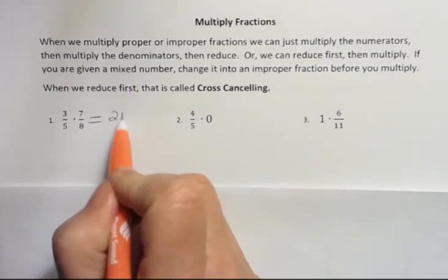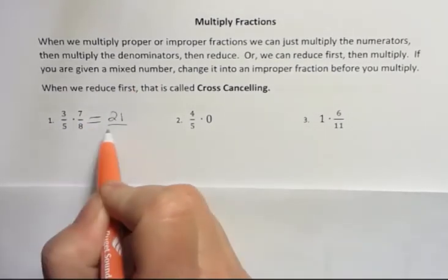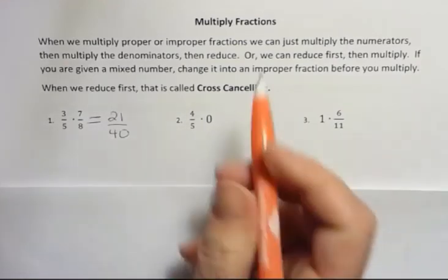3 times 7 is 21, and 5 times 8 is 40. And that's it.